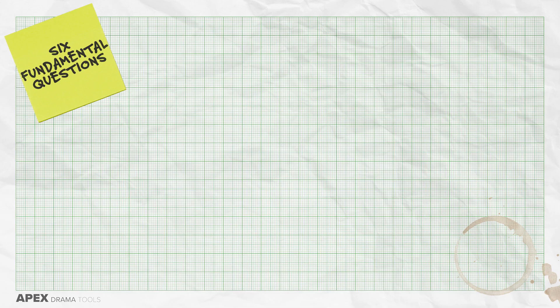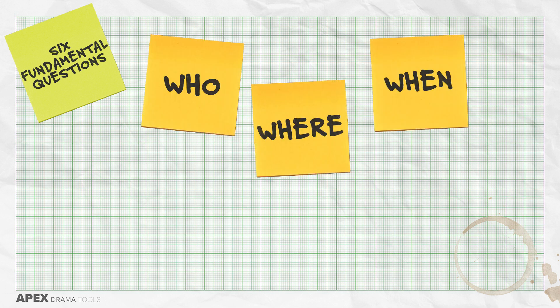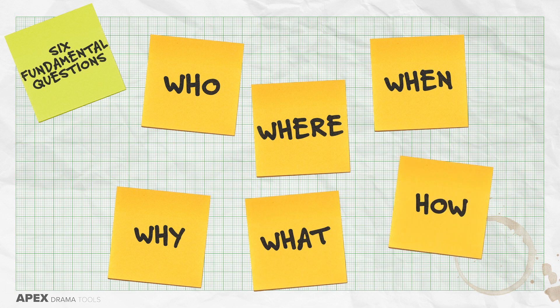Using given circumstances is a process where you unpack clues from the text to inform how you play a scene as an actor. These can also be called the six fundamental questions, and these are: who, where, when, why, what, and how. You want to answer these questions by writing down your answers in your script or a notebook.